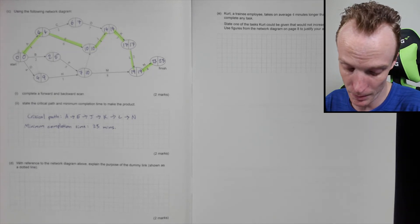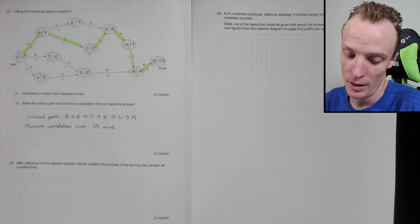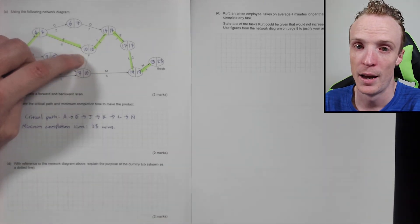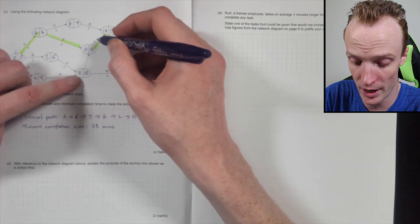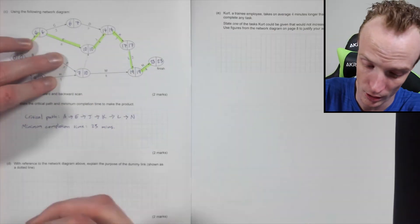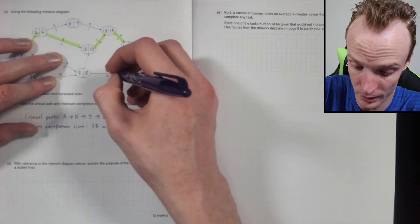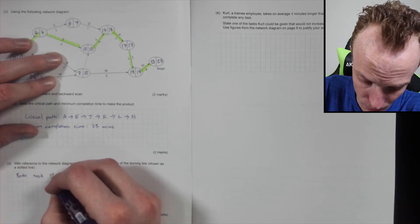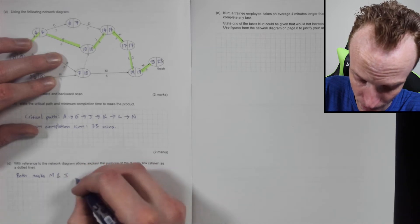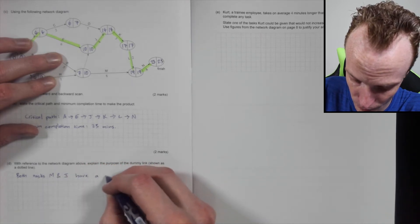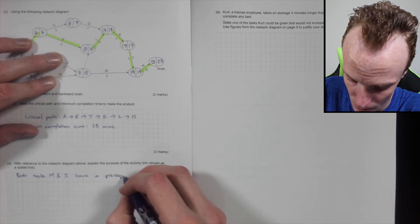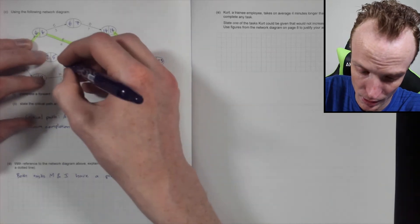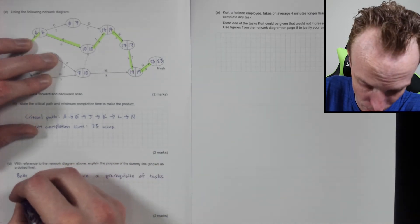With reference to the network diagram above, explain the purpose of the dummy link shown as the dotted line. Now you want to be fairly specific here. The purpose of the dummy link is obviously to reflect a connection that task J has a prerequisite of task F and H, as well as task M. So I'm going to say both task M, or tasks M and J, have a prerequisite of tasks F and H.